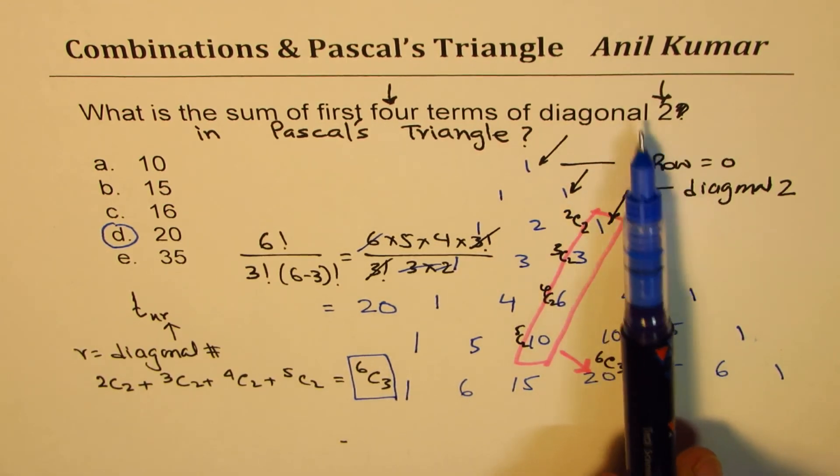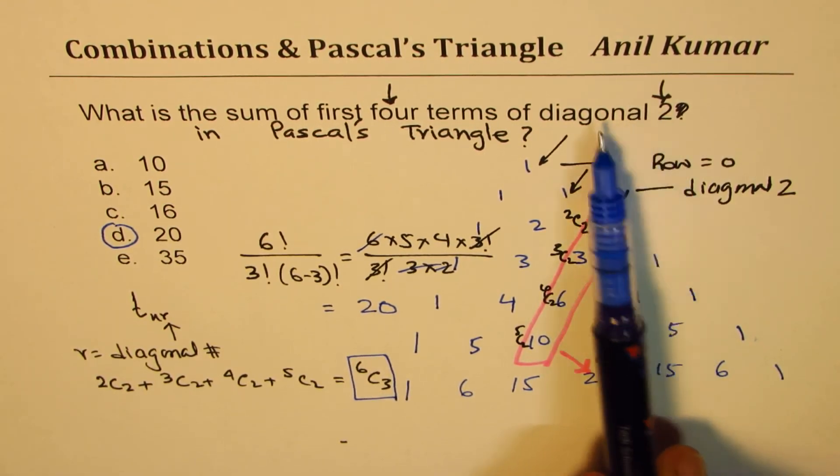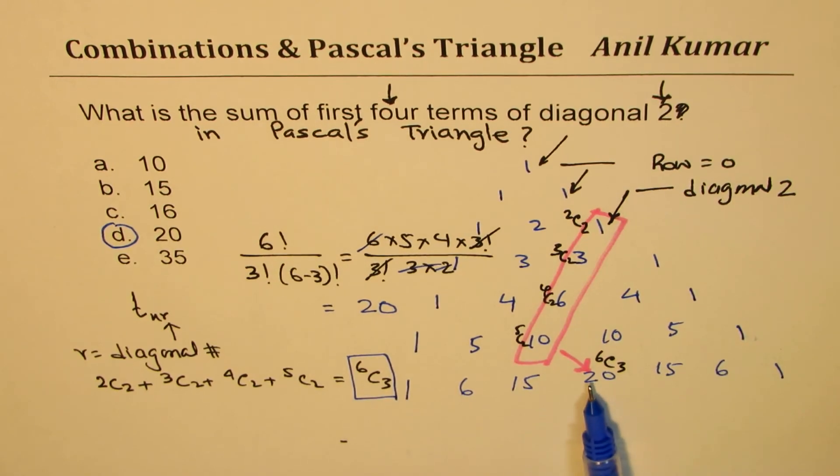That is how you could do it. If you are working on diagonal 2, then the sum lies in diagonal 3 after 4 terms. Do you see that? After 4 terms. Is it okay? So that is how you get to this answer: 6C3.